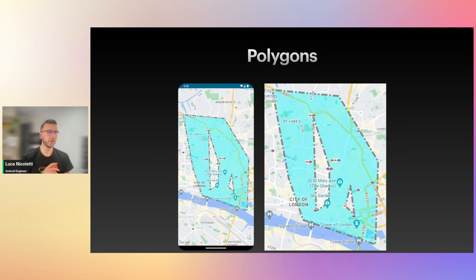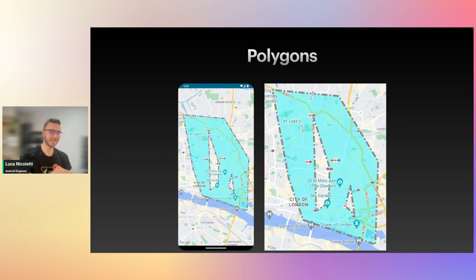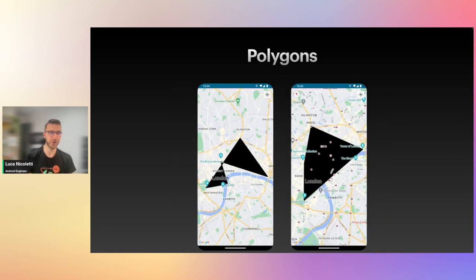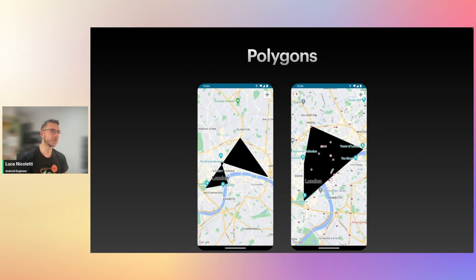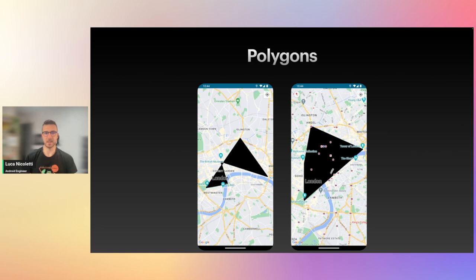Two noteworthy things: if the holes contain points outside of the polygon, something weird happens — the part outside the polygon gets colored while the part inside gets removed. Also, the order of the points in a polygon matters — mixed-up point order results in an incomplete polygon. Polygons don't require the first and last point to be the same; the library will draw the last closing connection automatically.